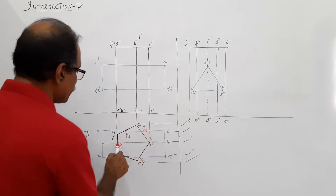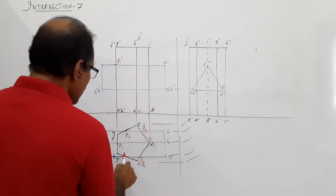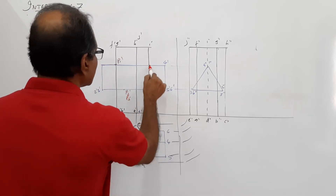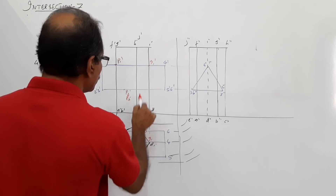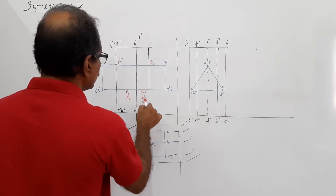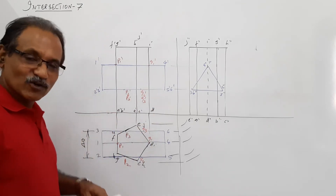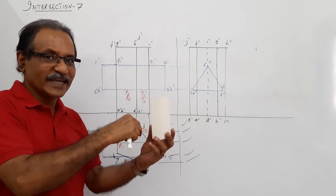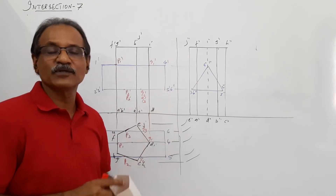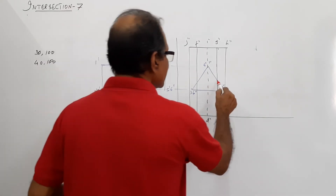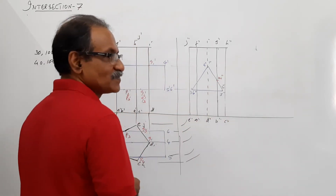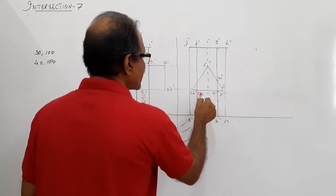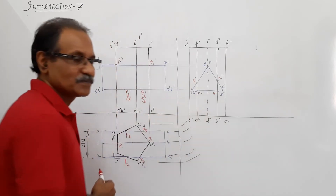Now let us project these points to the elevation. P1 projected to the elevation gives P1 dash. P2 projected gives P2 dash, which passes through P3 as well, so this is P2 dash as well as P3 dash. On the other side, Q1 gives Q1 dash, and Q2 passes through Q3, giving Q2 dash as well as Q3 dash.